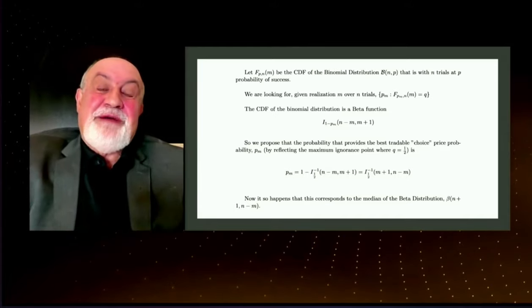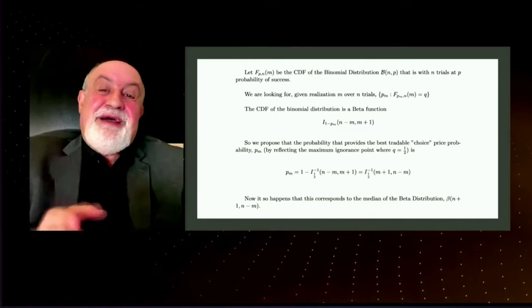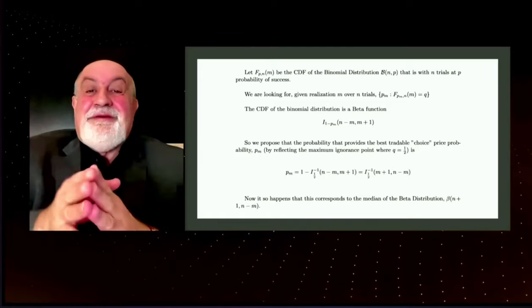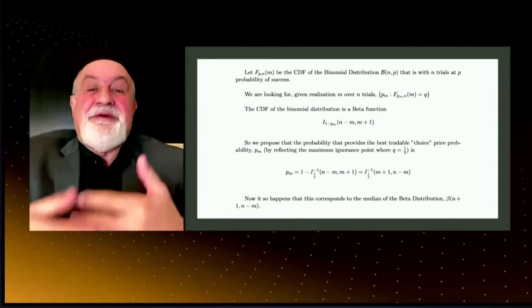So in other words, I'm going to come up with a probability p such that half the time, you know, some median, I'm going to be wrong by overestimating and half the time I'm going to be wrong by underestimating.